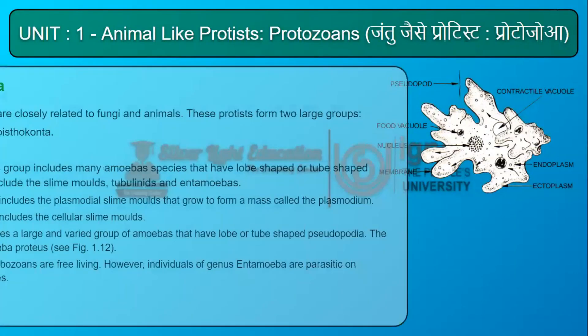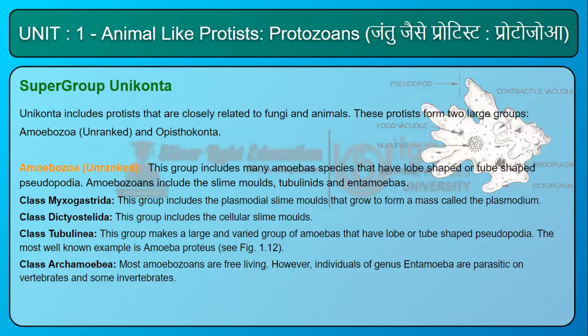Supergroup Unikonta includes protists that are closely related to fungi and animals, forming two large groups: Amoebazoa (unranked) and Opisthokonta. Amoebazoa includes many amoeba species that have lobe-shaped or tube-shaped pseudopodia. Amoebozoans include the slime molds, tubulinids, and entamoebas.